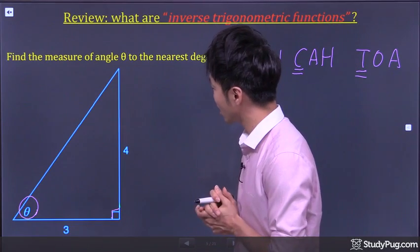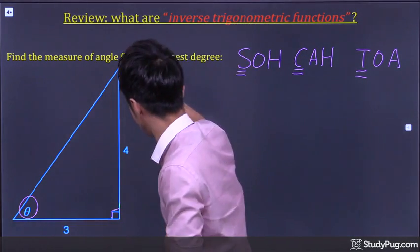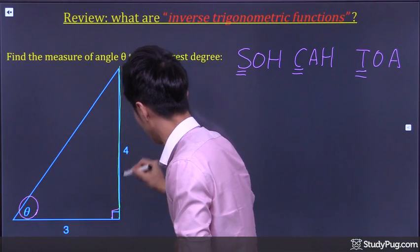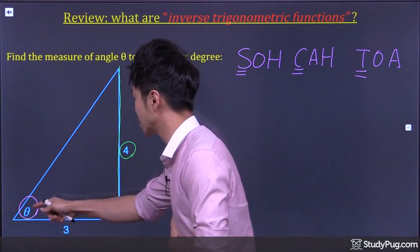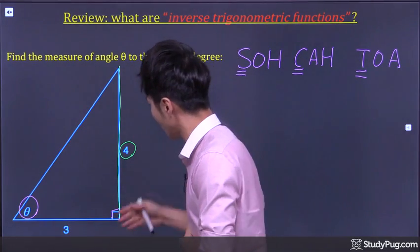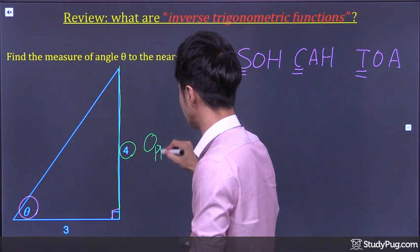In this triangle, we are given the length of two sides. Now, this side with a length of four is considered as the opposite side, right? It's the side opposite the angle theta. So let's write it out. Opposite.